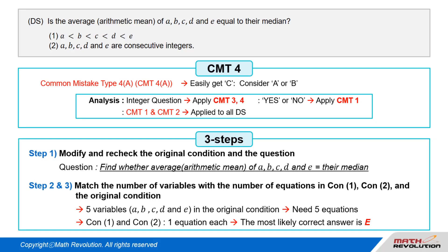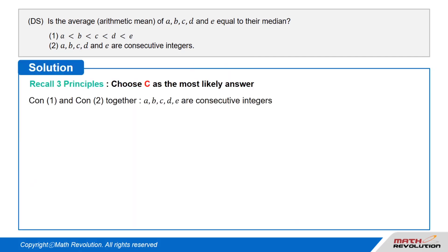In general, questions with a mixture of integers and statistics are the most difficult questions that are related to CMT 4A or B. Recall three principles: Choose C as the most likely answer.